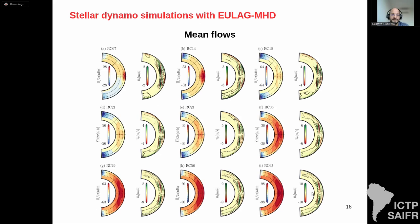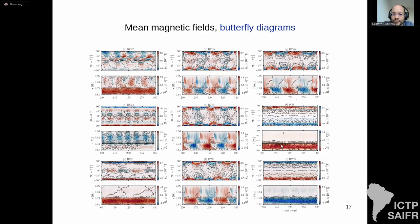We can also apply this for the magnetic field. Using this code (EULAG), for the mean flows we get a range of solutions corresponding to solar-like stratification at different resolutions, varying rotation from 7 to 63 days. It's possible to see how differential rotation changes with increasing resolution, which means we are changing the Rossby number.